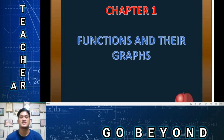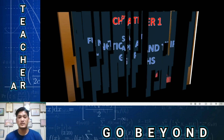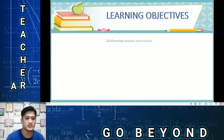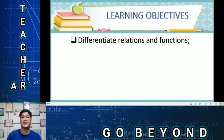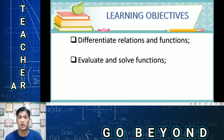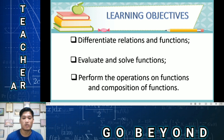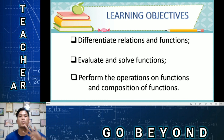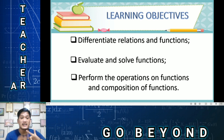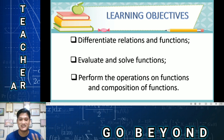For our learning objectives in this chapter: first, we have to differentiate relations and functions; second, evaluate and solve functions; and third, perform operations on functions and composition of functions. We have four major topics: relations and functions, evaluation of functions, operations of functions, and composition of functions.